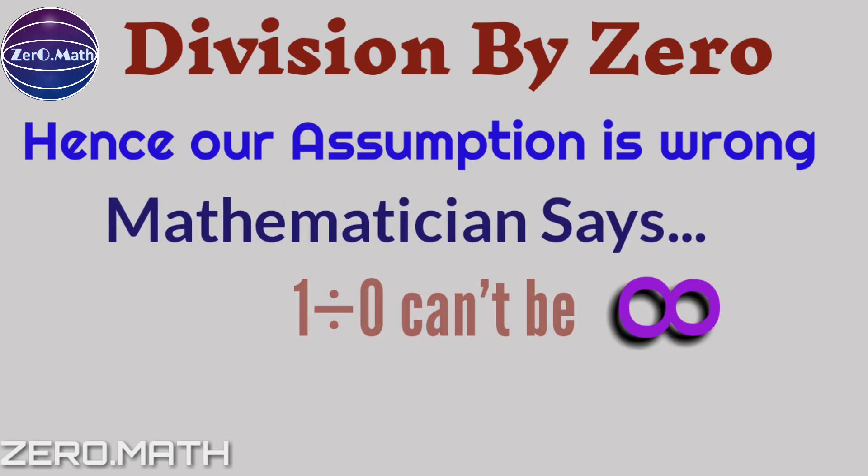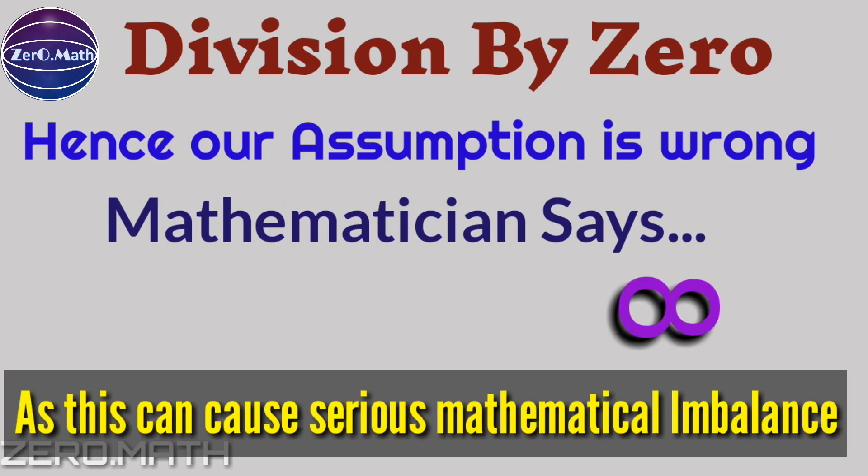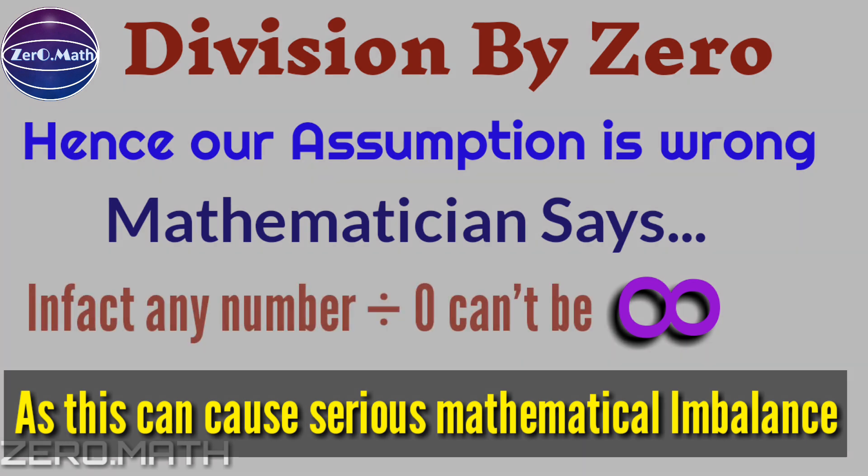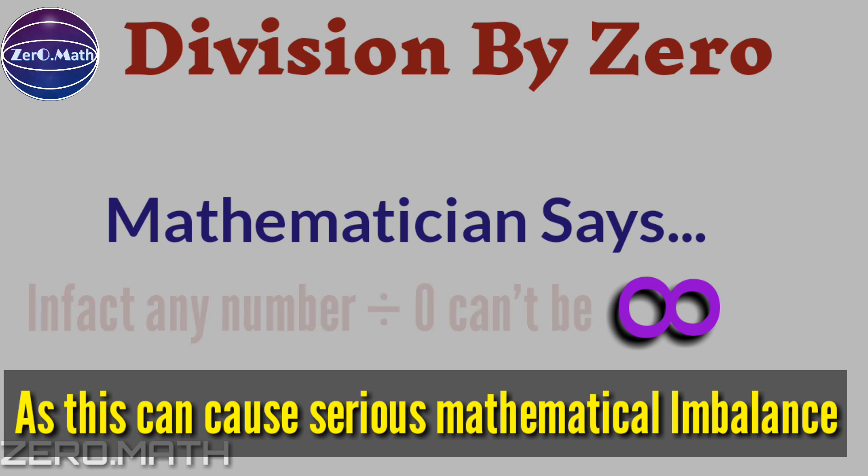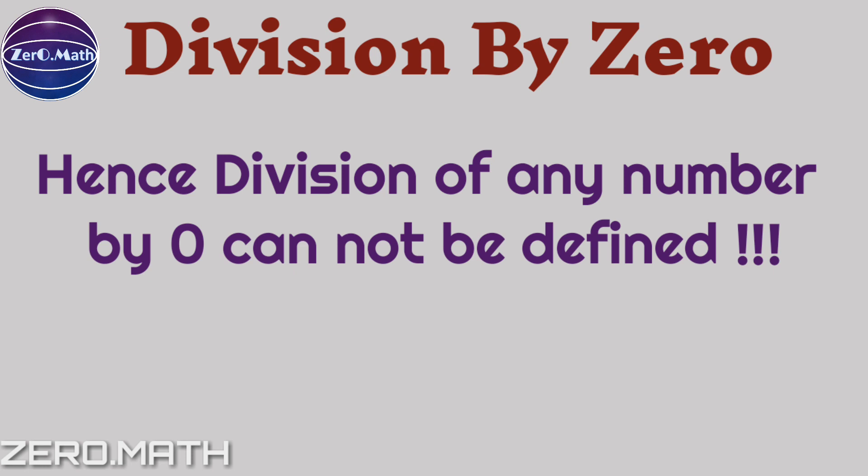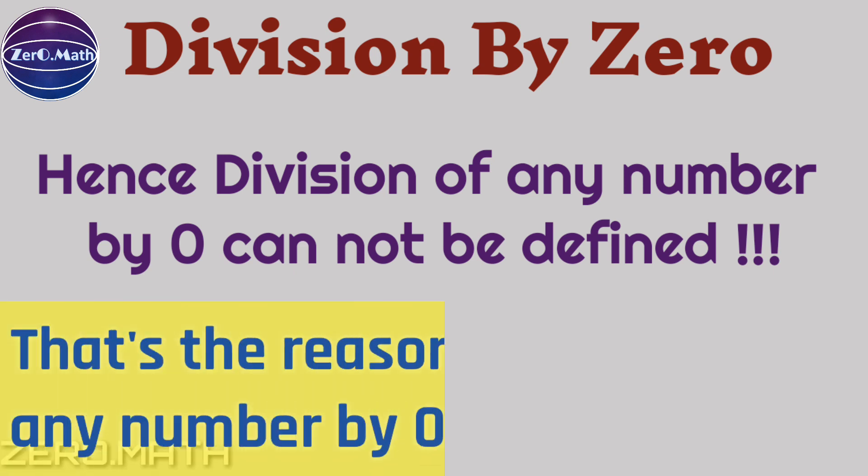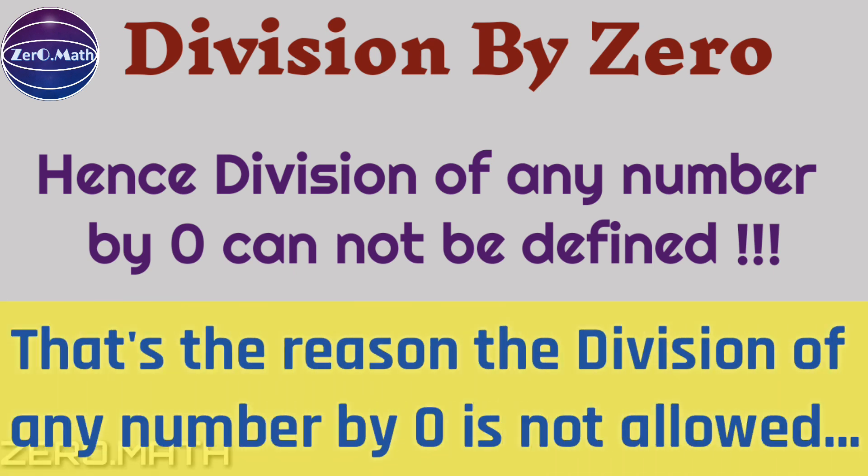Hence, our assumption is wrong. Mathematics says 1 by 0 cannot be infinity. In fact, any number divided by 0 cannot be infinity, as this can cause a serious mathematical imbalance. Hence, division of any number by 0 cannot be defined. That's the reason division of any number by 0 is not allowed.